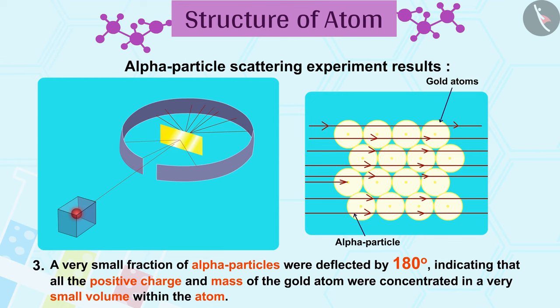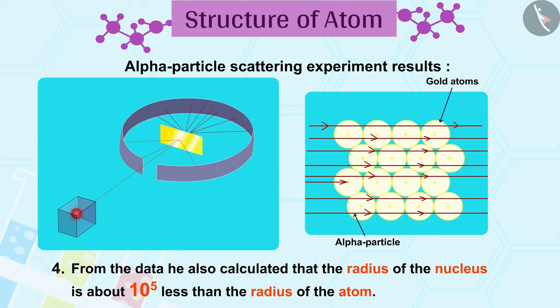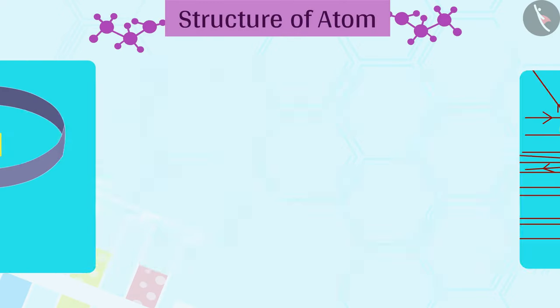A very small fraction of alpha particles were deflected by 180 degrees, indicating that all the positive charge and mass of the gold atom were concentrated in a very small volume within the atom. From the data, he also calculated that the radius of the nucleus is about 10 to the power 5 times less than the radius of the atom.